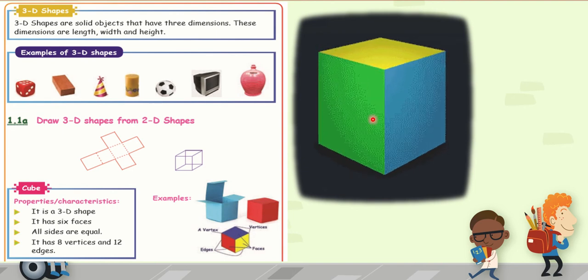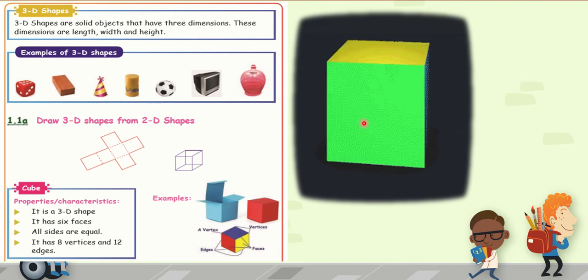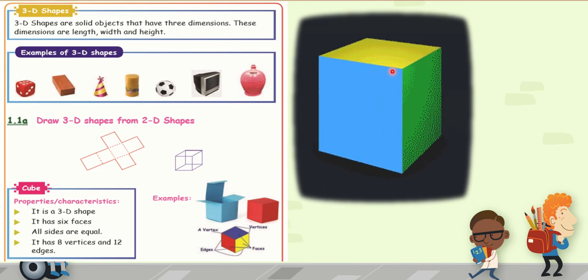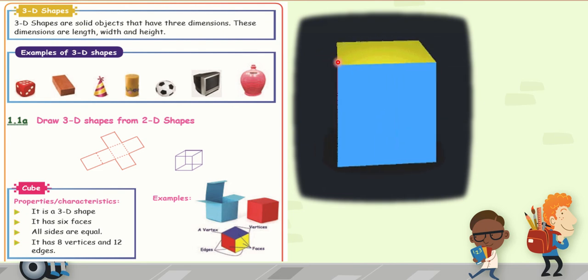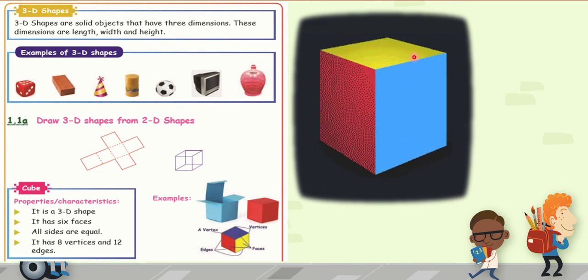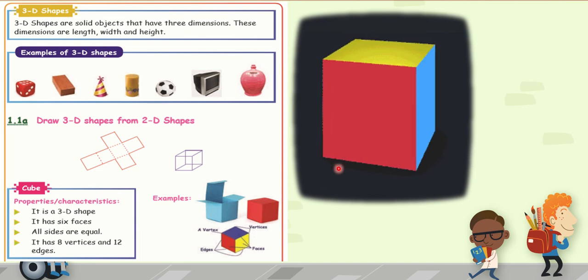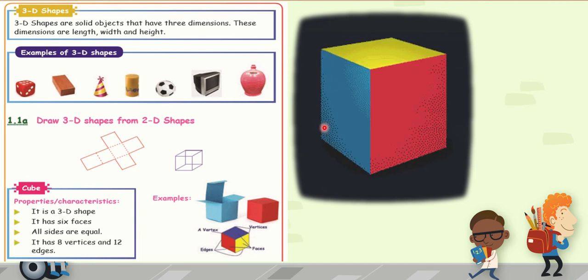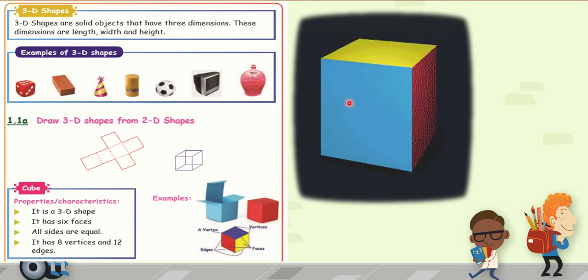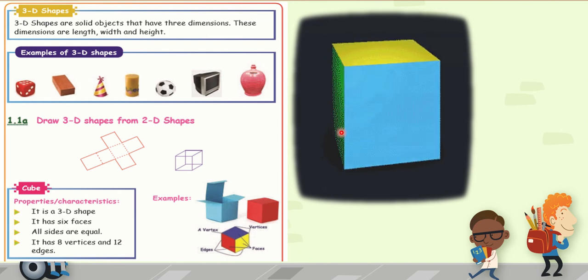Next step. How many vertices are there? Vertex means this corner. Vertex or corner. That is 1, 2, 3, 4, 5, 6, 7, 8. 8 corners are there.